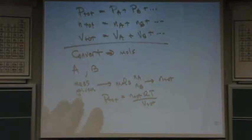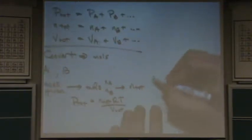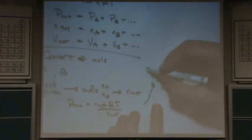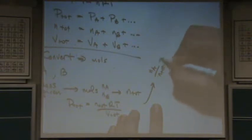You get the total pressure by saying N total times R times T over V total. So there's the total pressure usually. And then you can use, I guess I'll put it up here.